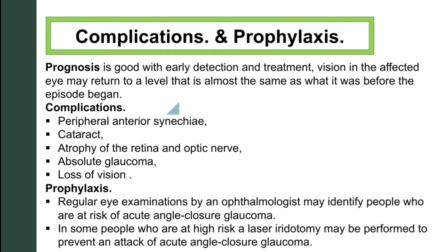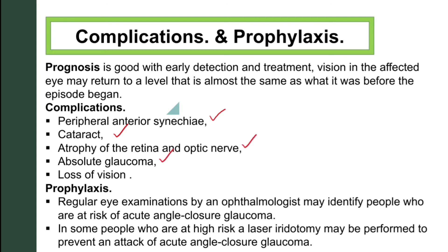Prognosis is good with early detection and treatment — vision in the affected eye may return to nearly the same level as before the episode began. Complications include peripheral anterior synechiae (PAS), cataracts, retinal atrophy, atrophy of the optic nerve, absolute glaucoma, and loss of vision.